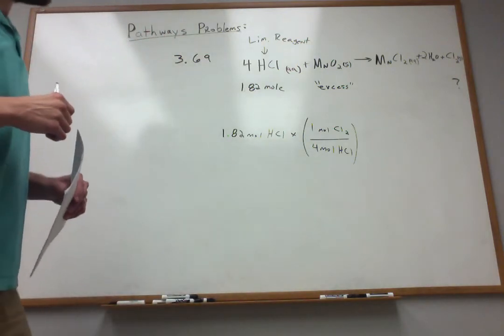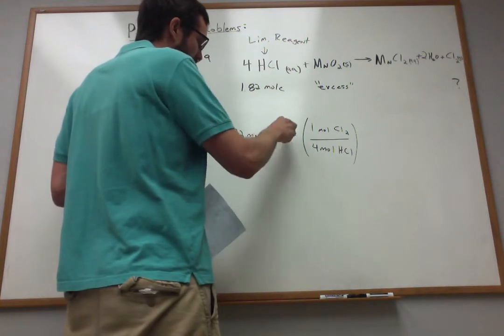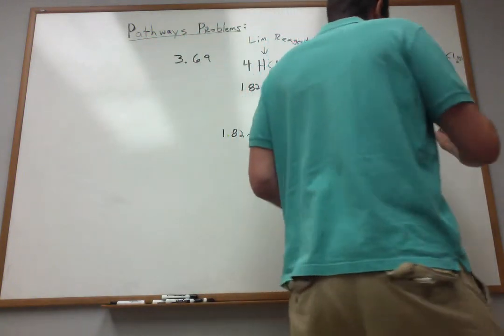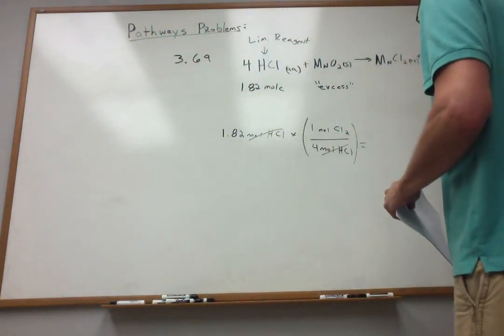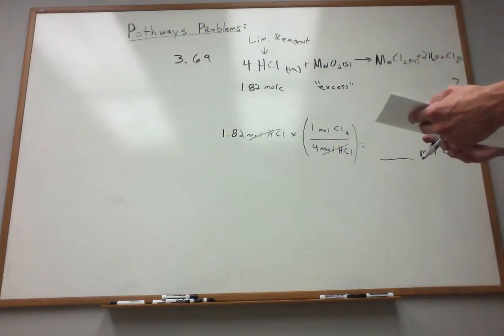we can make only 1 mole of chlorine gas. It's a 1 to 4 ratio. I've got 1.82 moles of HCl. That units cancel and convert to moles of chlorine gas that can possibly be produced via this reaction using the 1.82 moles.